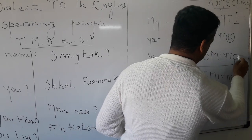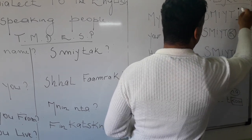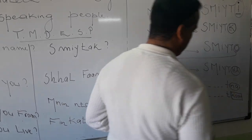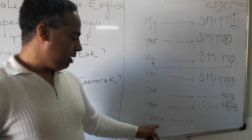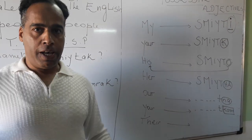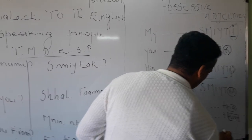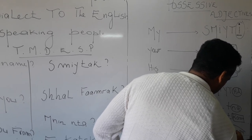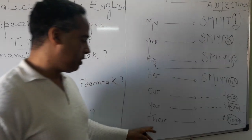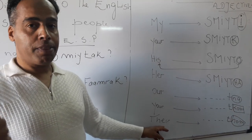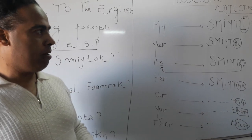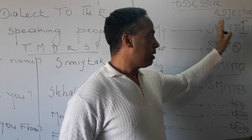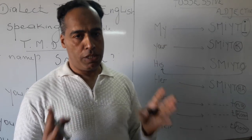So these are the possessive adjectives in the Moroccan dialect: 'i' for my, 'k' for your, 'o' for his, 'ha' for her, 'na' for our, 'koum' for your plural, and 'hum' for their. So 'smithahum' means 'their names.' The letters circled here are the possessive adjectives in the Moroccan dialect.